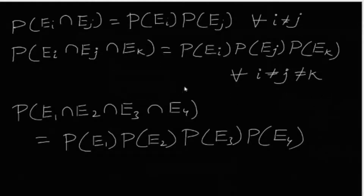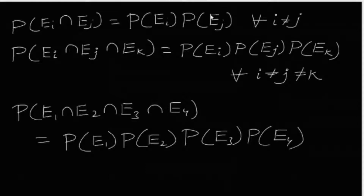How many such conditions are there? If we have n events, we have 2^n minus n minus 1 conditions. Here with four events, that's 2^4 minus 4 minus 1 conditions.